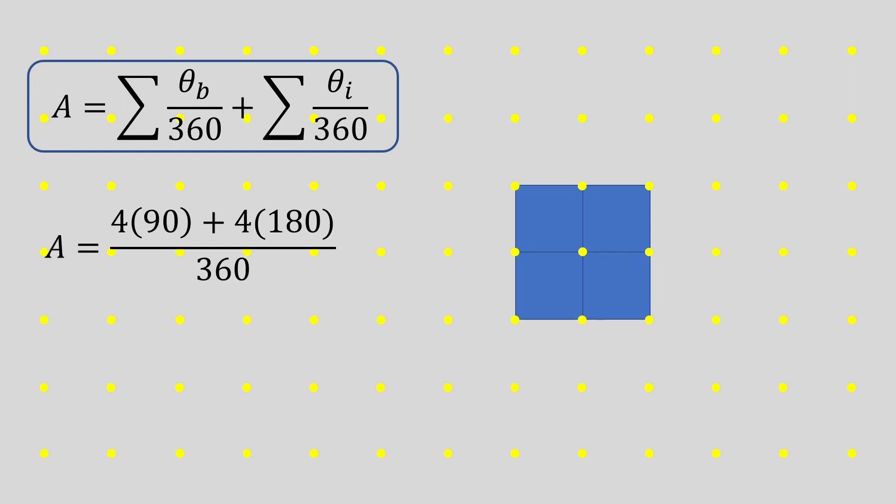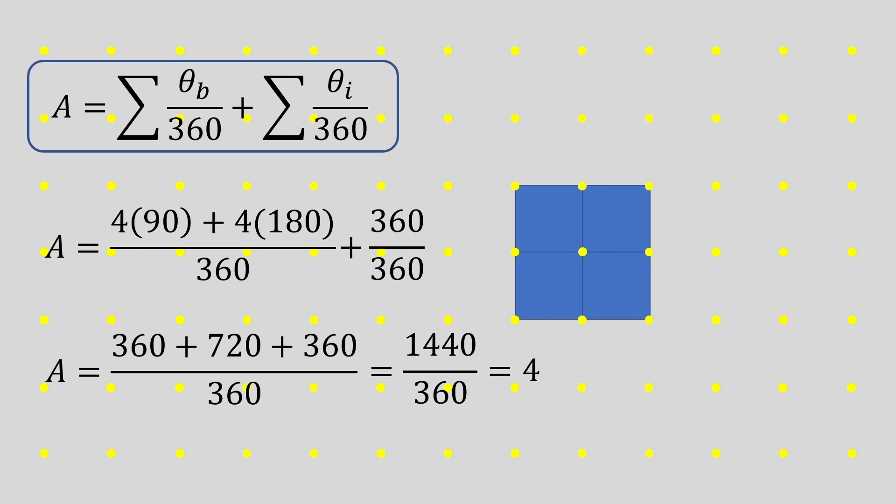Our boundary angles consist of the 4 90 degree angles plus the 4 180 degree angles. And to that, we can add the second term, which includes the one interior angle, which is worth 360. Simplifying the numerator and joining common denominators, we get this. The numerator adds up to 1440. And 1440 over 360 is 4. How cool is that? It matches the area of our 4 squares.